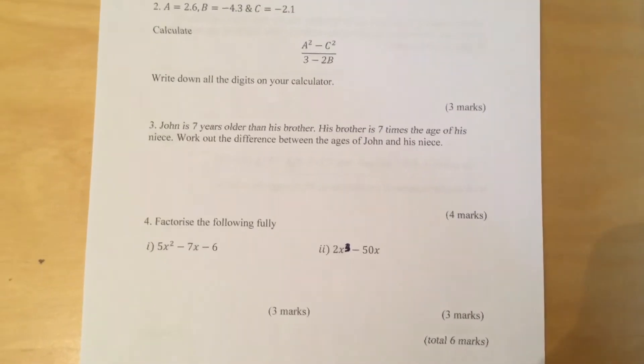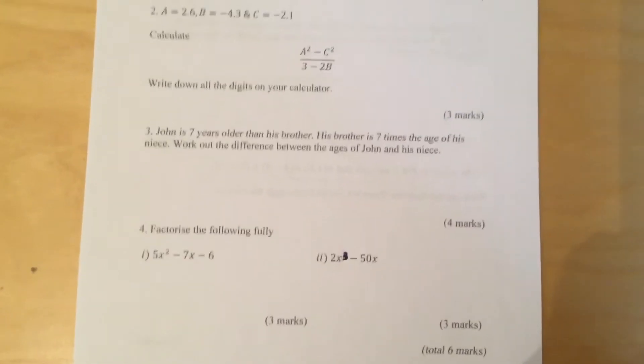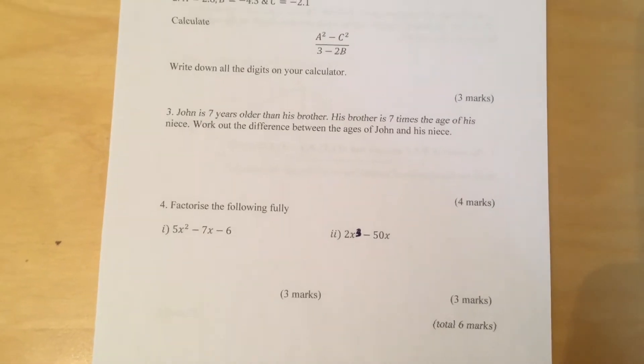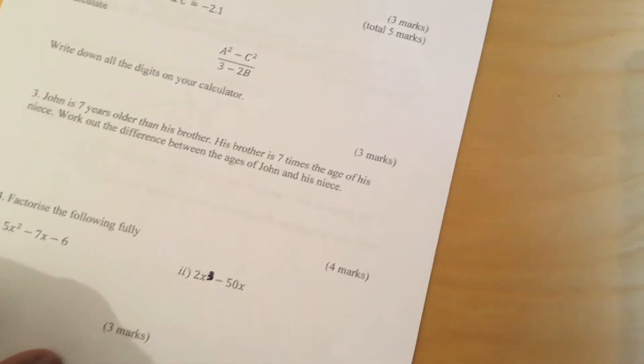Question 4. Factorise the following fully. Part 1. 5x squared minus 7x minus 6. Part 2. 2x cubed minus 50x. And that's question 4.